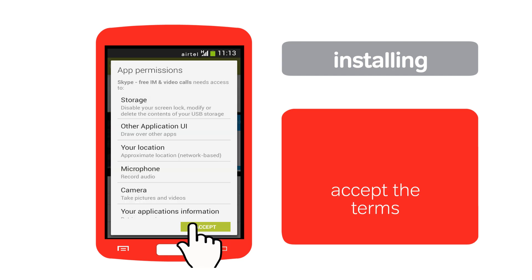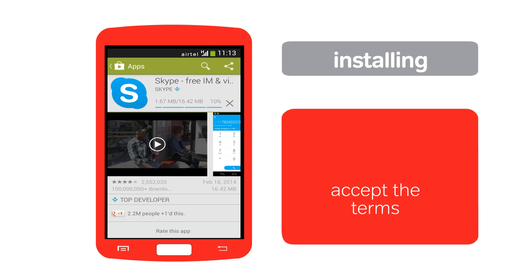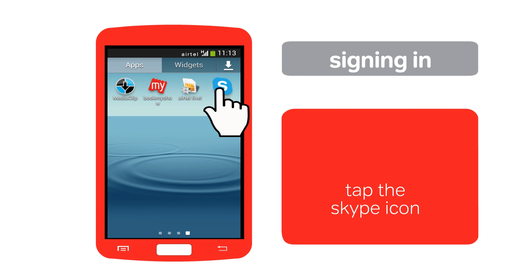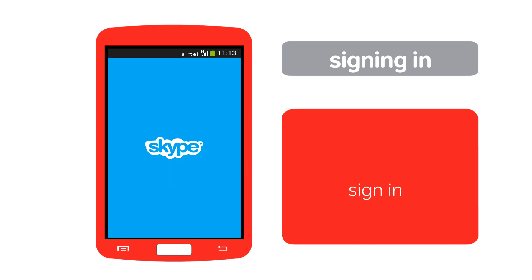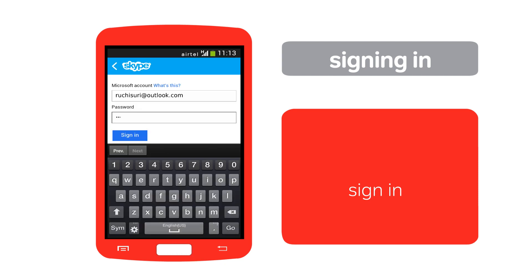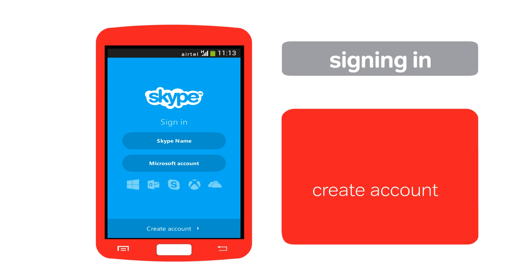Tap here to install Skype. To open Skype, tap the apps list, then tap the Skype icon. If you already have an account, sign in with your username and password. If you don't have an account, you can create one.